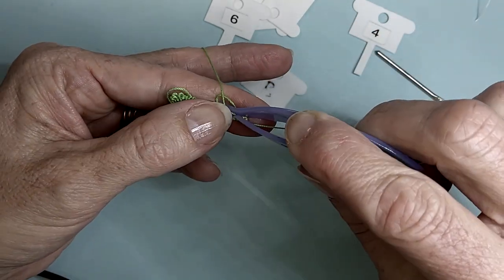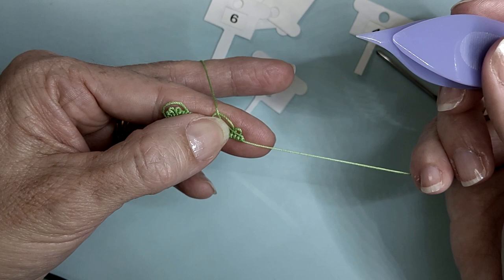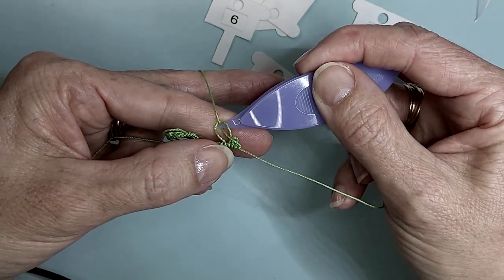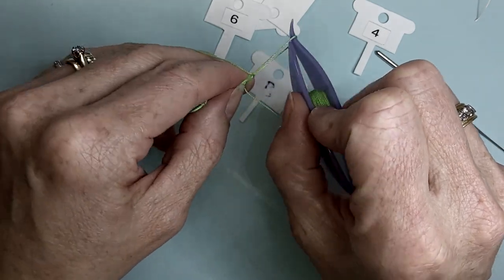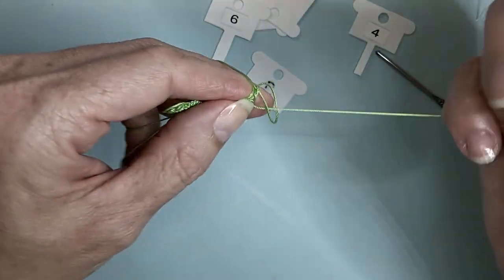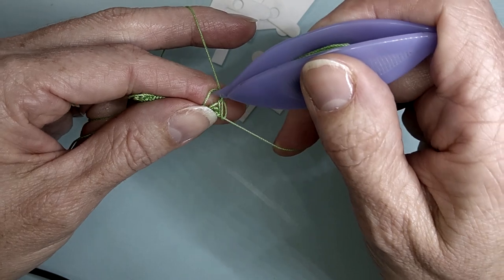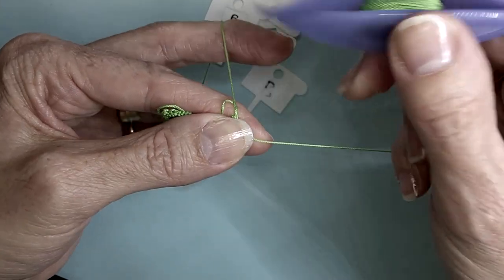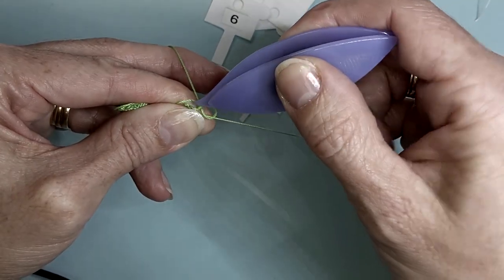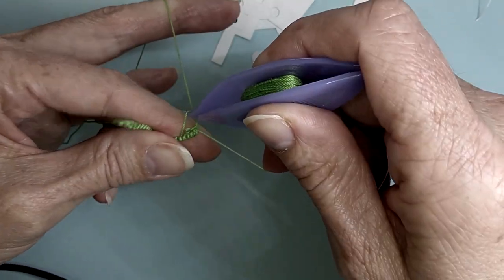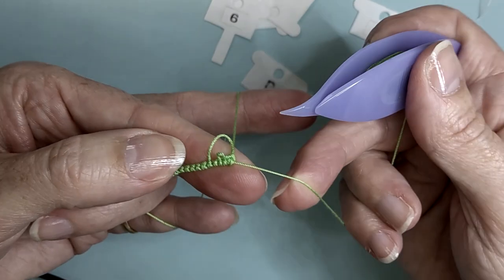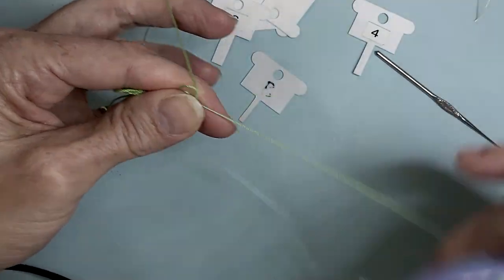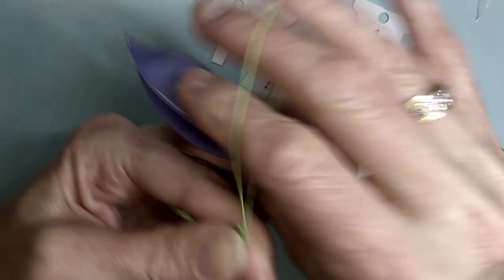And we're joining to the long picot like we did before. Place the thread over the top of the picot, come up from underneath, pull that loop down, pass your shuttle through, and secure the second half of the double stitch. We're finishing our ring with seven picot two.